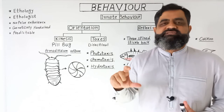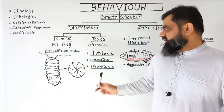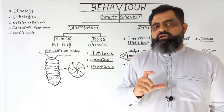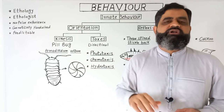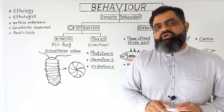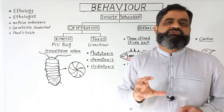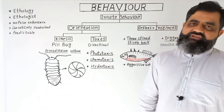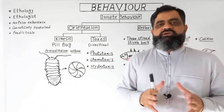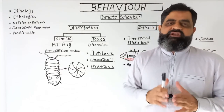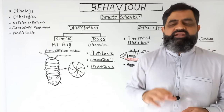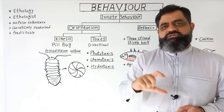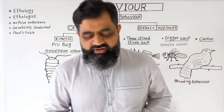In chemotaxis, bacteria move away from strong chemicals like acids, bases, or antibiotics — this movement is known as negative chemotaxis. In hydrotaxis, animals like fish or other water-inhabiting organisms that move towards water show positive hydrotaxis, while animals that move away from water show negative hydrotaxis. In this way, animals naturally show innate behavior in different directions, and all these behaviors are shown by the whole group of that organism.